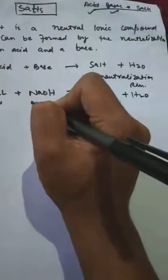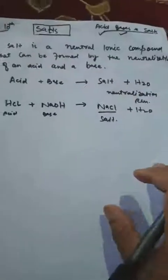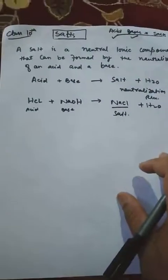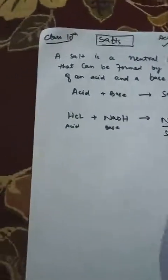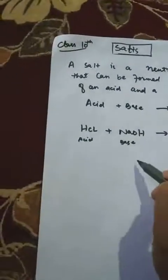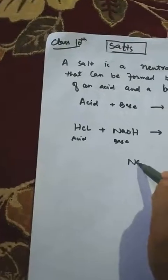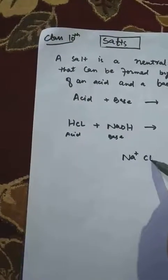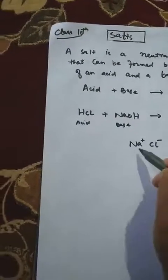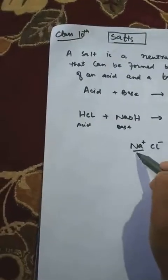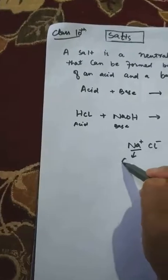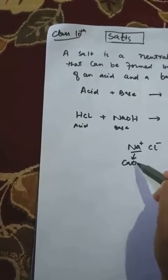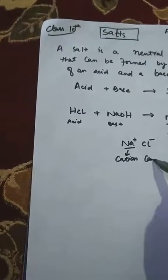When acid and base react, there is formation of salt. Remember that in this salt, Na⁺ is the cation and Cl⁻ is the anion. The cation comes from the base and the anion comes from the acid.